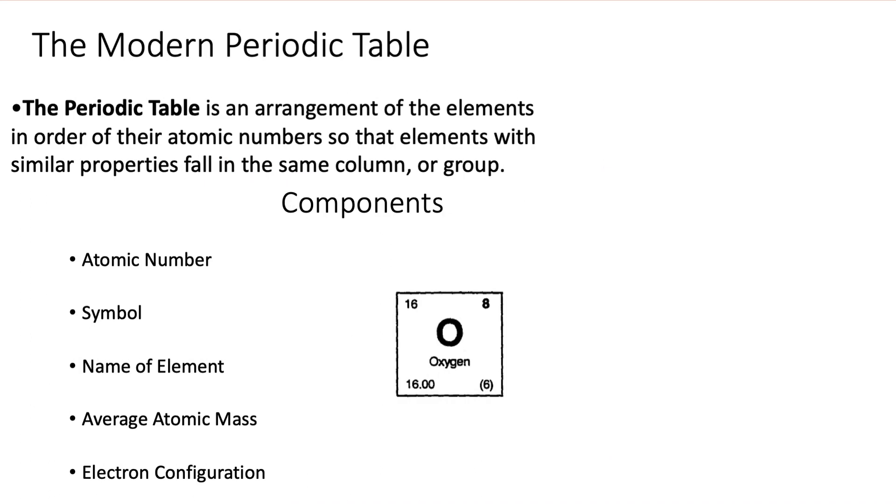The modern periodic table. The periodic table is an arrangement of the elements in order of their atomic numbers so that the elements with similar properties fall in the same column or group. The components of a block on the periodic table include the atomic number, symbolized by capital letter Z, the element symbol, the name, the average atomic mass (capital letter A), and sometimes the electron configuration as well.